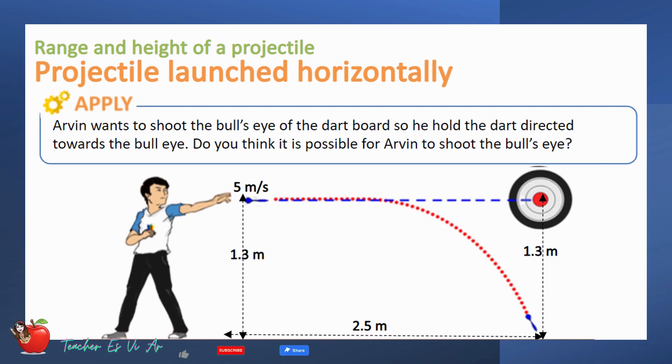The answer is no. We know that the dart will not move straight because of the action of gravity. Instead, it will follow a parabolic path as shown.